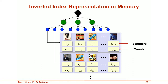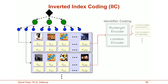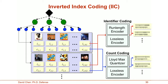The inverted index also requires a large amount of memory. To substantially reduce this, we developed a method called inverted index coding. In the first step, we encode the image identifiers by run-length encoding a sorted sequence of identifiers and then losslessly encoding the run lengths. In the second step, we encode the corresponding counts by performing Lloyd-Max quantization and losslessly encoding the quantization indices. Although inverted index coding is similar in spirit to tree histogram coding, the quantities being encoded and their statistics are quite different.